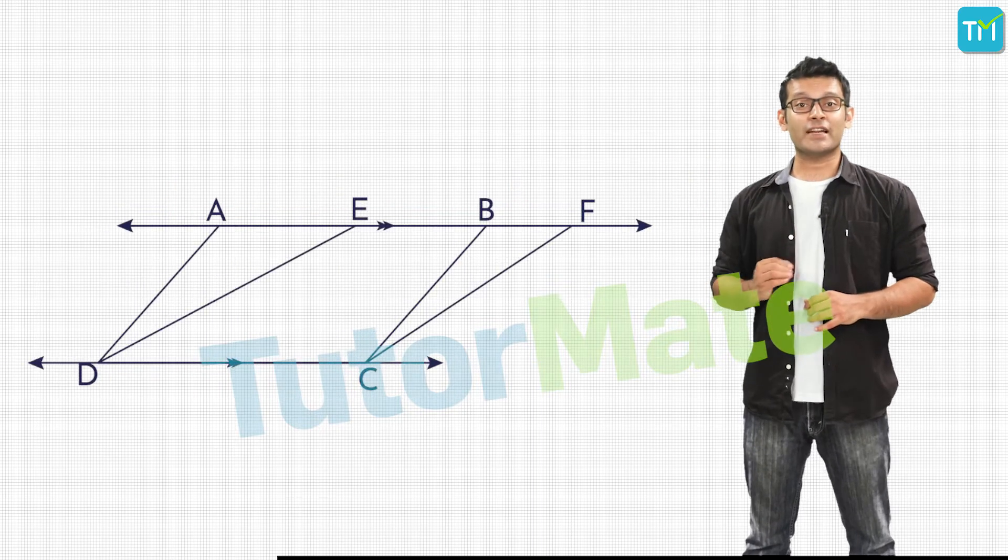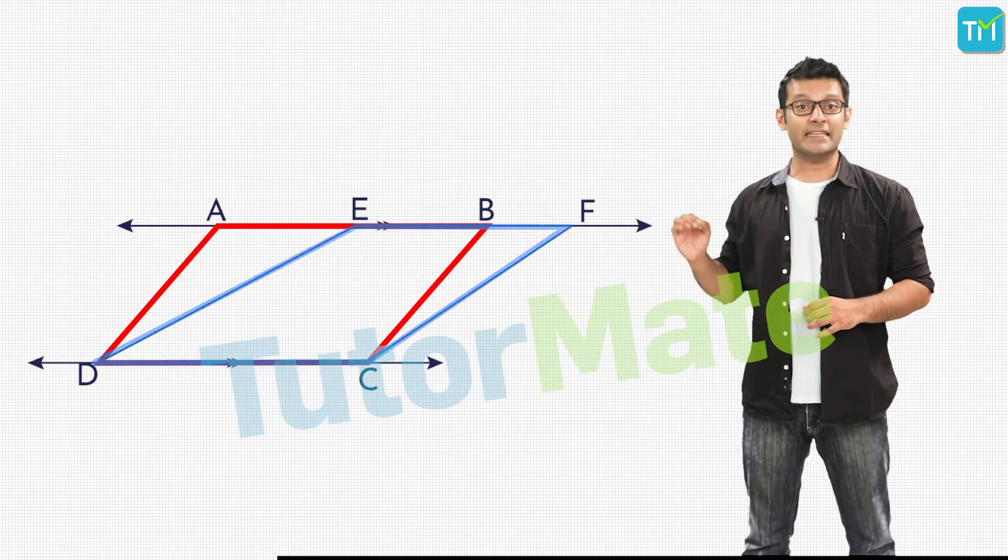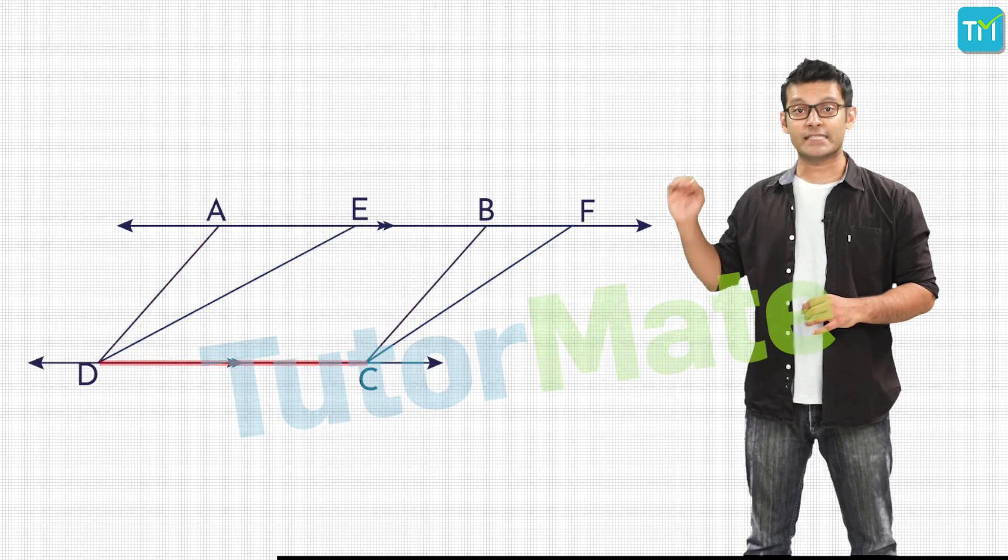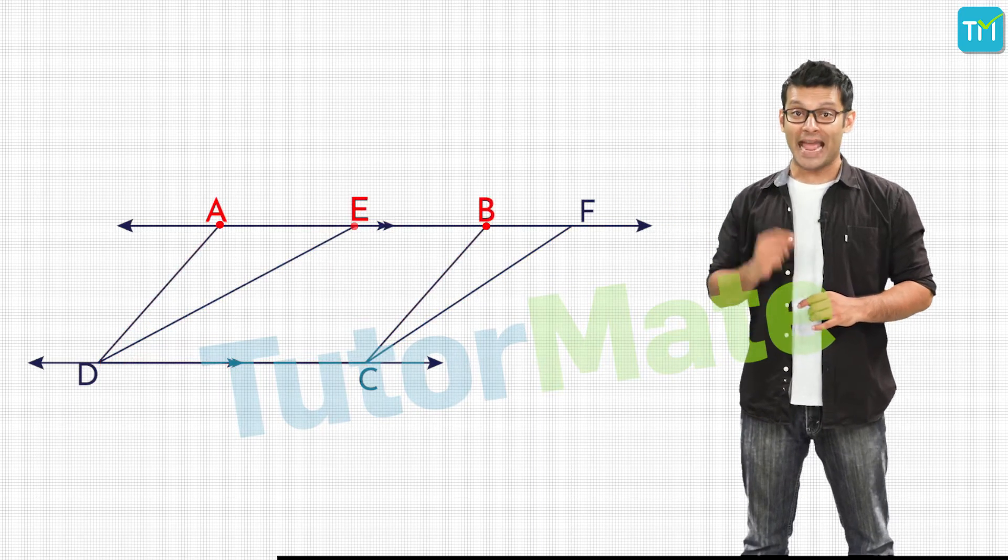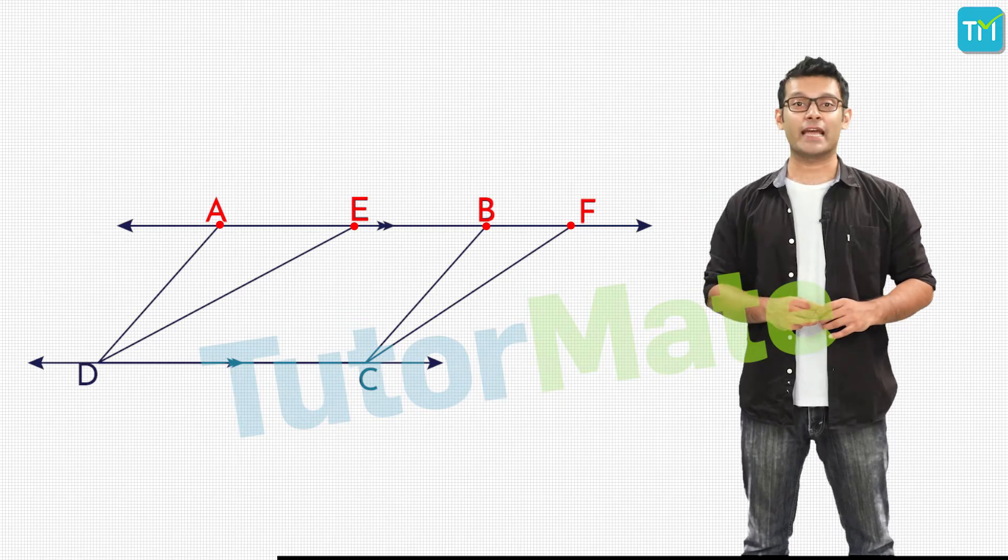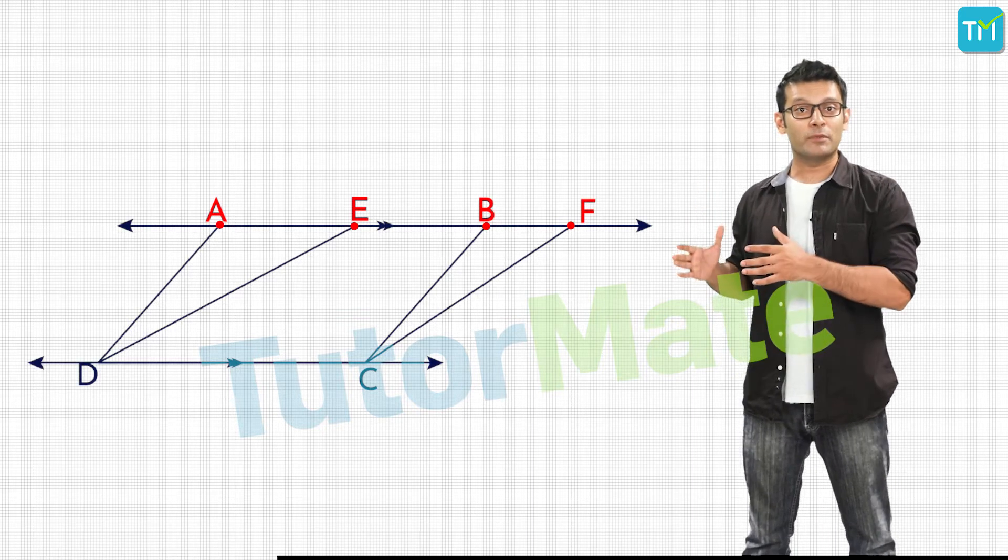In this figure too, the quadrilaterals ABCD and EFCD have a common base CD and opposite vertices AB and EF lie on the same line that is parallel to the common base DC.